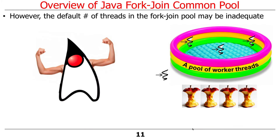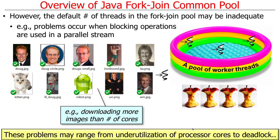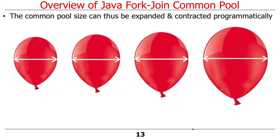The default number of threads may be inadequate — you might end up with more work to do than you have threads in your pool. This is particularly true if you have blocking operations. In general, the fork join pool is primarily designed for things that run to completion, but if you use it for blocking operations, the default pool without extra work will end up with underutilization or even deadlock.